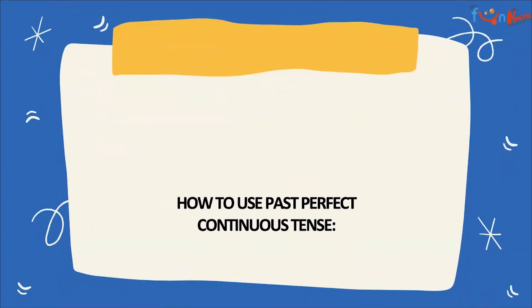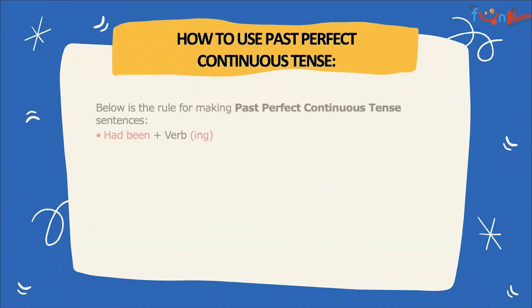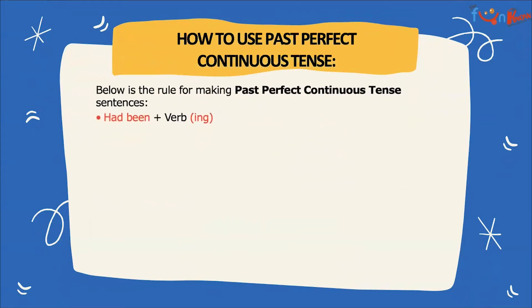Now, how do we construct a past perfect continuous tense sentence? You use 'had been' plus the verb with 'ing'.